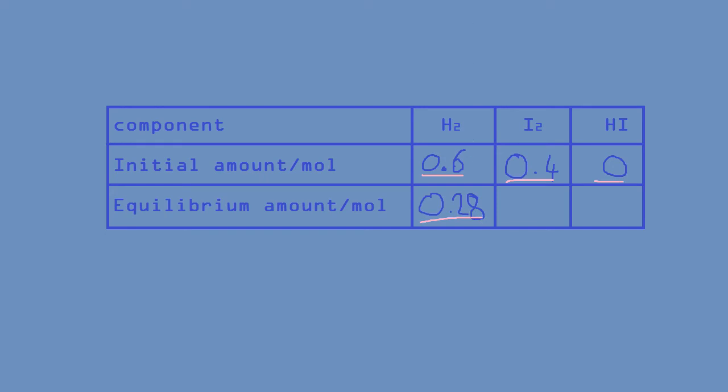Now what you'll have to work out is the concentration of I2 and HI. The way you do this is you work out the difference between the initial amount of H2 and the equilibrium amount of H2, because this is the amount in moles that have been used in the reaction. And because I2 and H2 both react with one molecule to form two molecules of HI, they have the same.